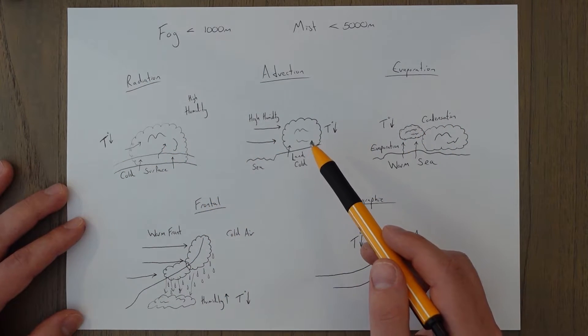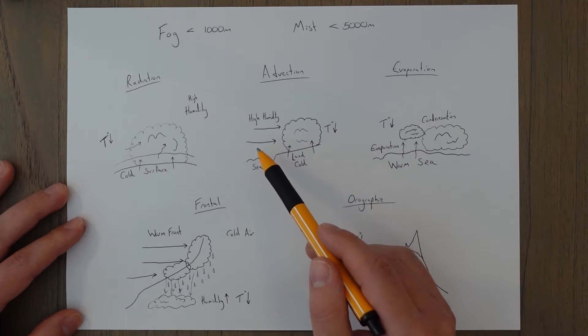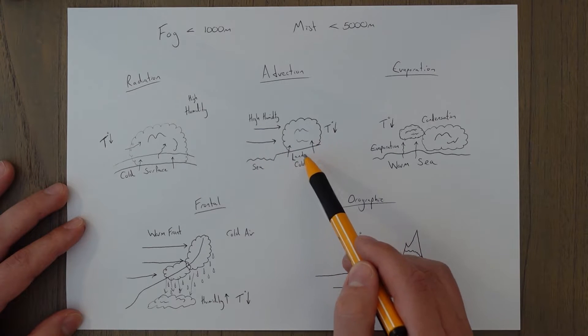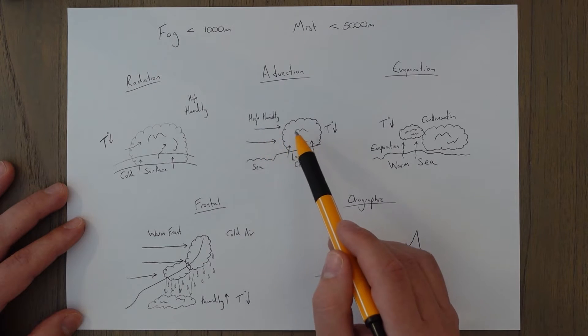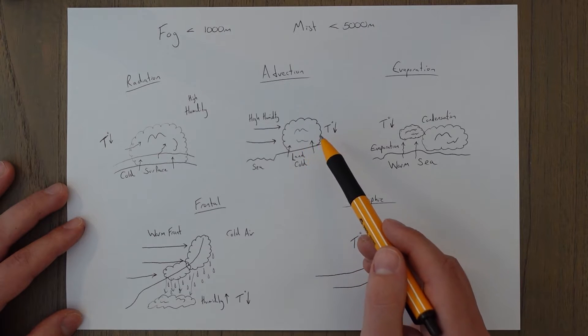You also get advection fog, which is a term used to describe fog by warm humid air blowing in over a cold surface. The cold surface then cools down this warm humid air to below the dew point and the water vapor condenses out into fog.